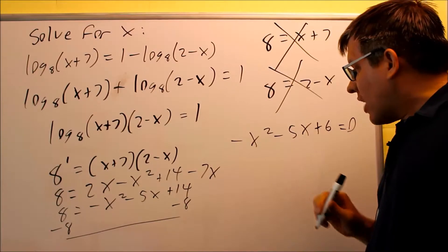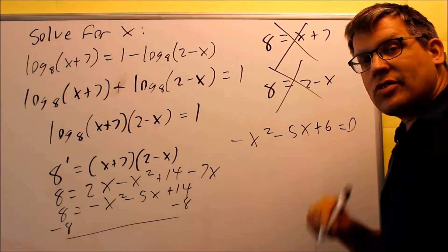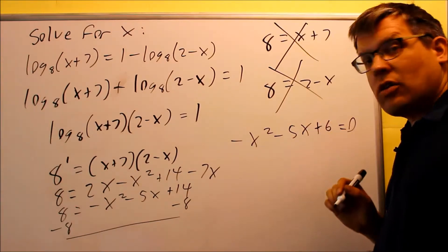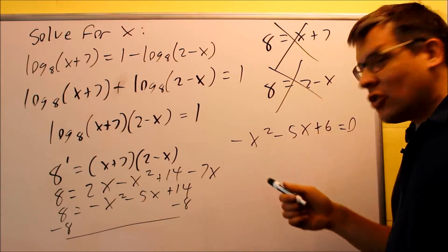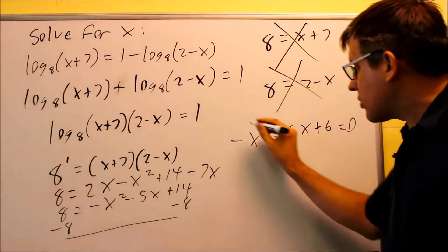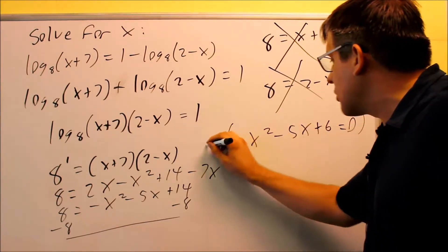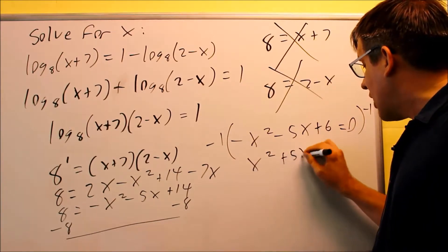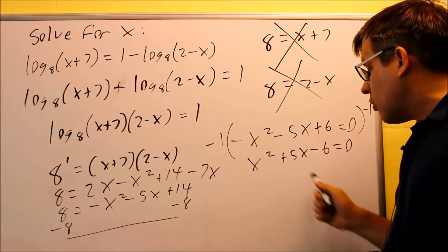Now, because we have a negative in front of the x squared, it's going to be a lot easier to factor if you get rid of that negative in front. I've seen time and time again, a lot of people have problems. They'll mess up a sign when trying to factor something like this. So it's better to cancel it out. So I'm going to take the whole thing and multiply both sides by negative 1.